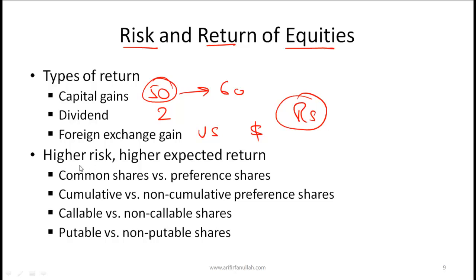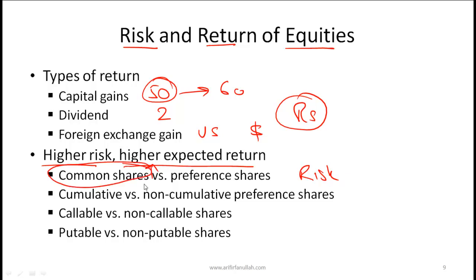A core theme in finance is that when investors take higher risk, they expect a higher return. Comparing different kinds of investments within the equities asset class, we look at relative risks and set return expectations accordingly. Common shares represent a residual interest, meaning common shareholders get paid only after preference shareholders. So common shares carry higher risk and hence the expected return should be higher for common shares relative to preference shares.